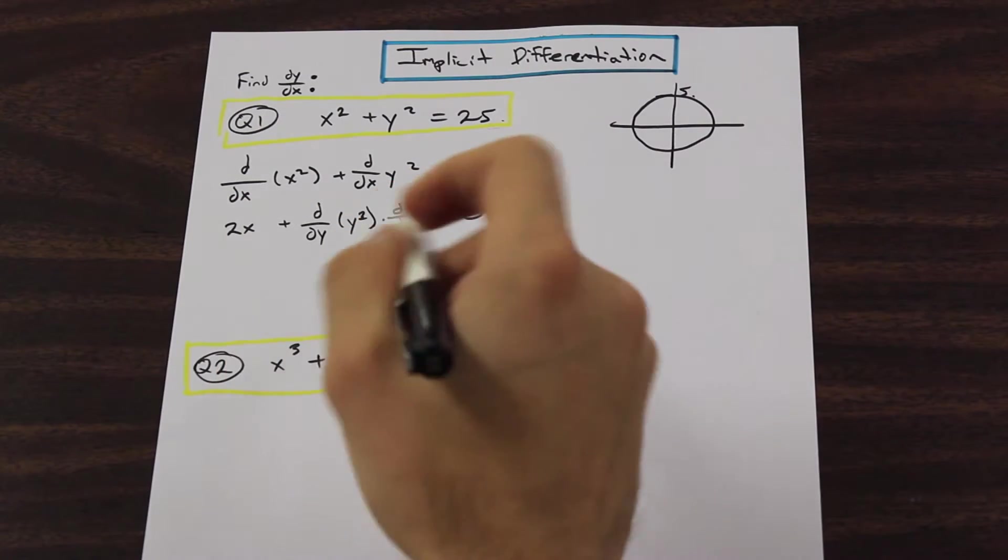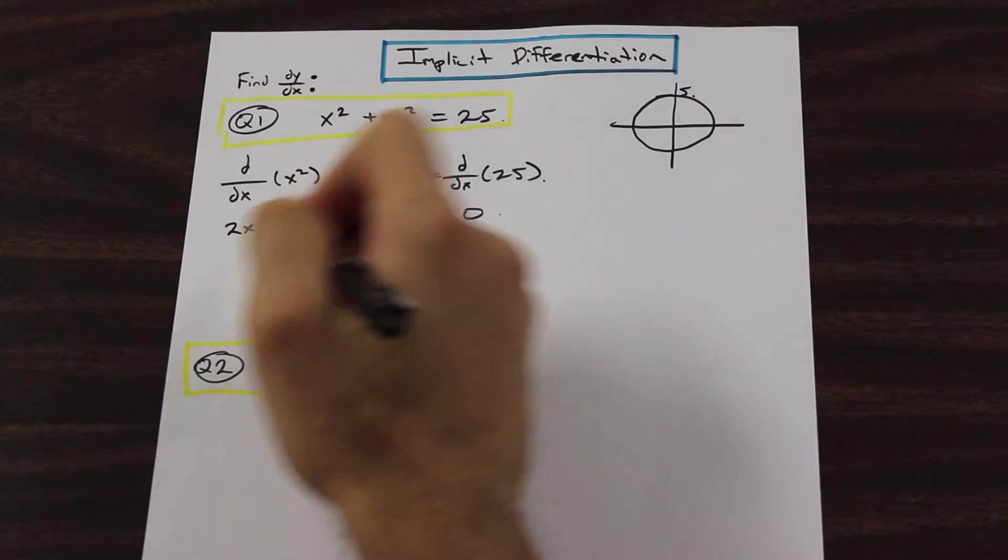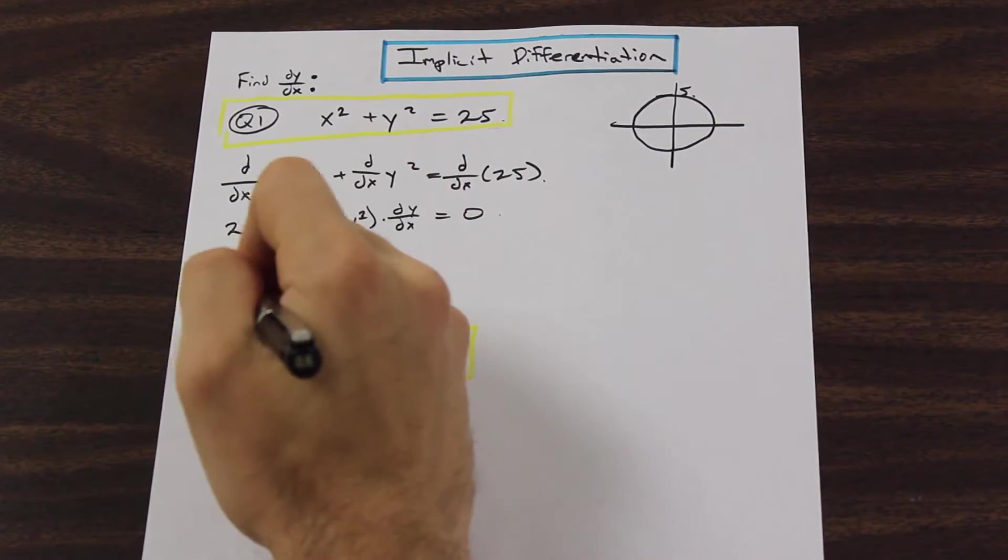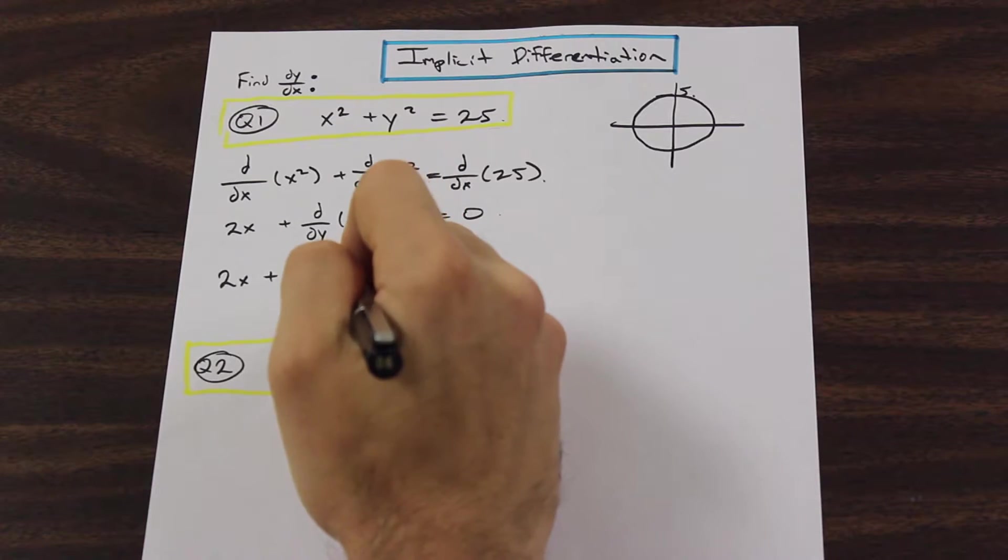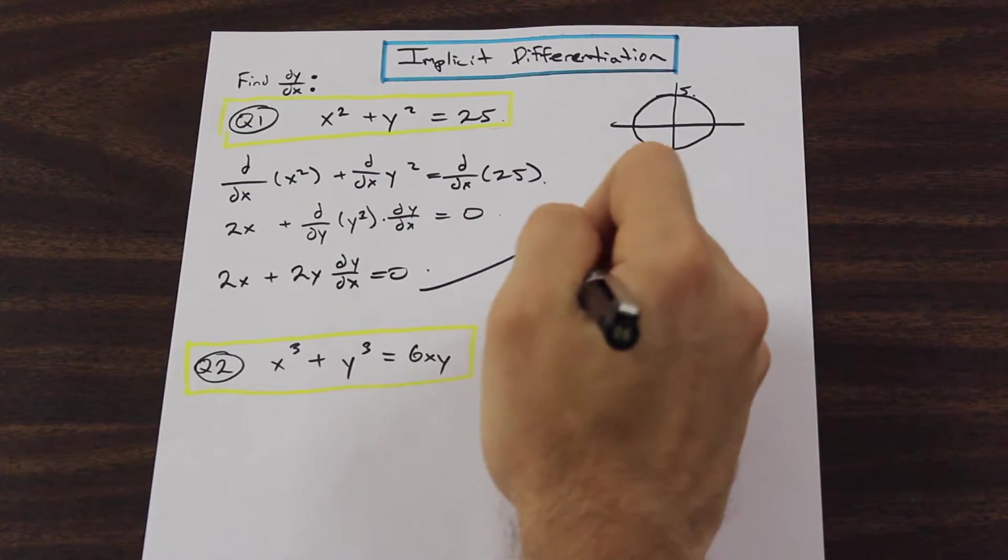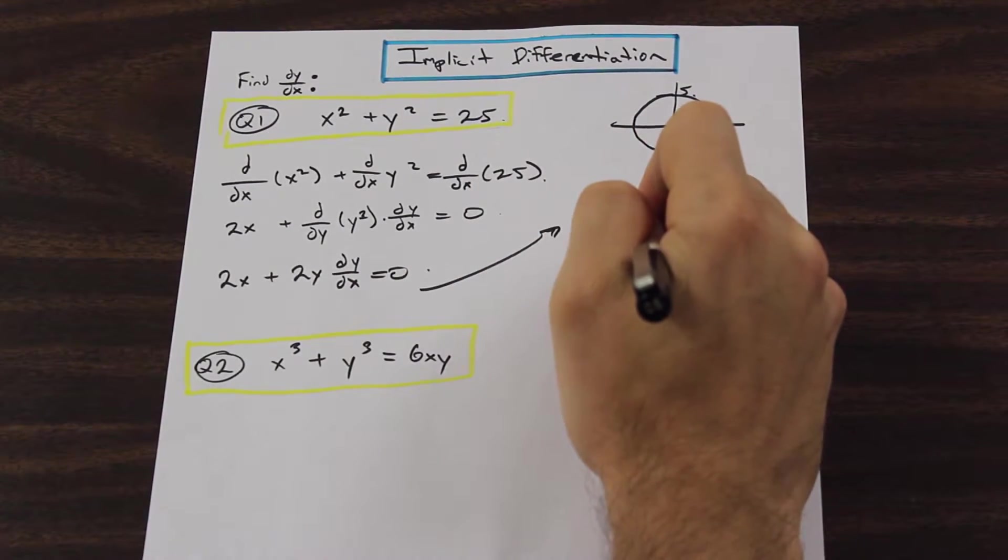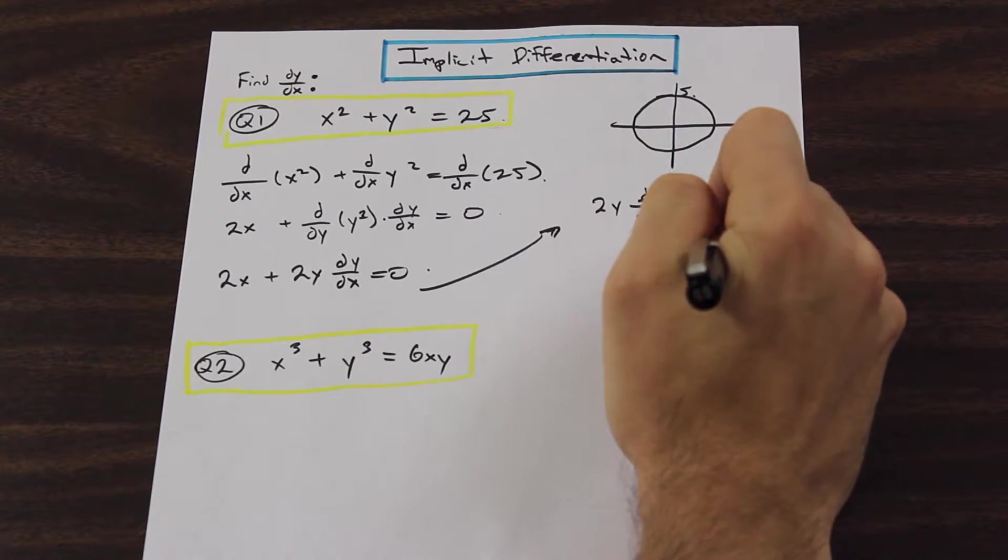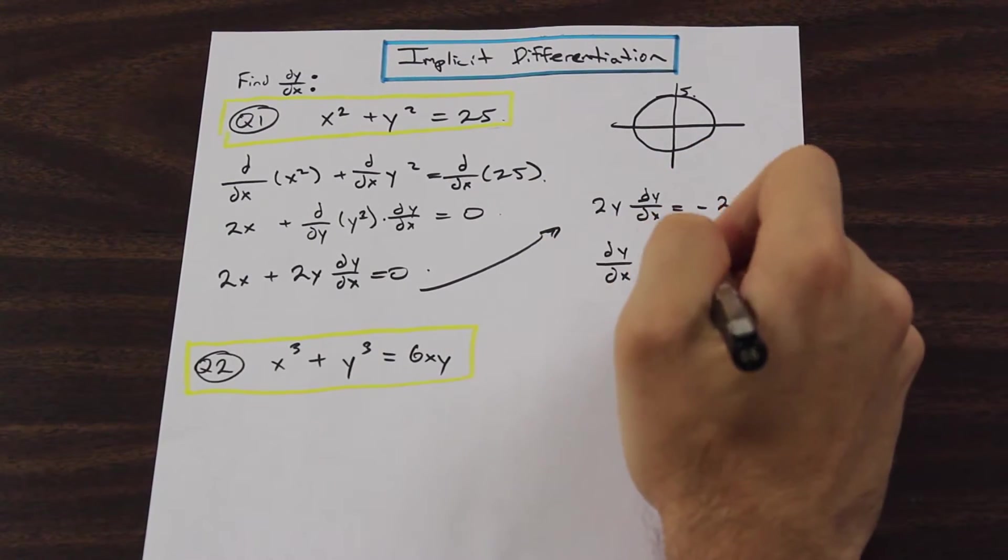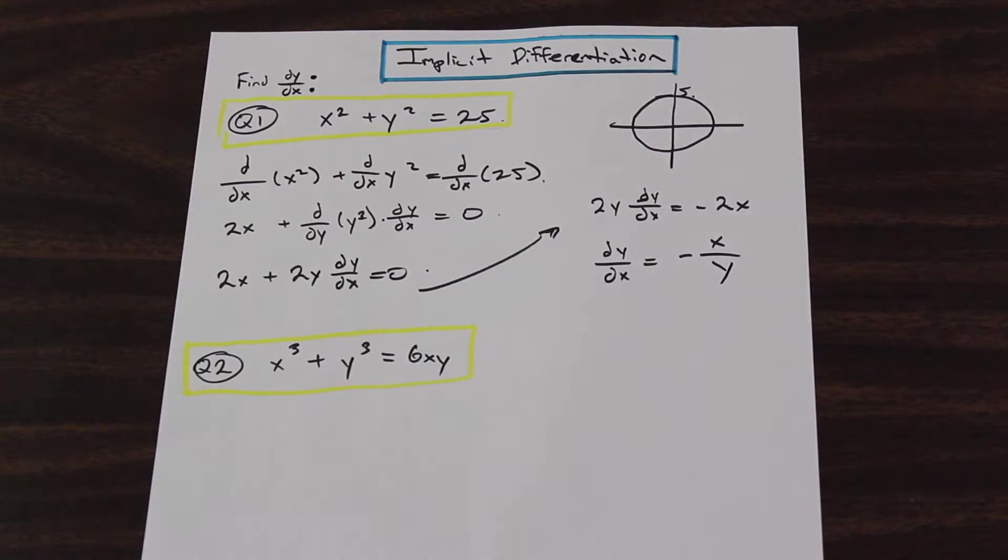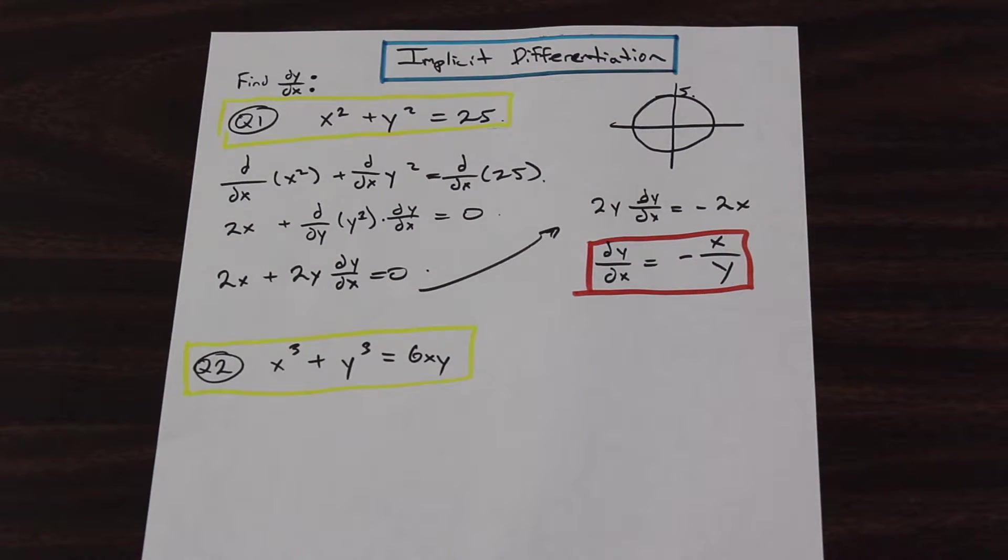So now we're here. And if you'll recall, we just have to solve for dy by dx, isolate it by itself, and the question is finished. So we have 2x plus 2y dy by dx equals 0. Let's move 2x to the other side. So we have 2y dy by dx equals negative 2x. And dy by dx equals, then we just divide both sides by 2y. We'll cancel the 2s. We're left with negative x over y. And that's really the end of that question. We found dy by dx.